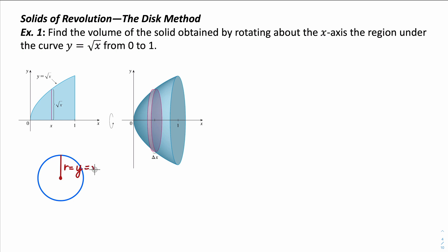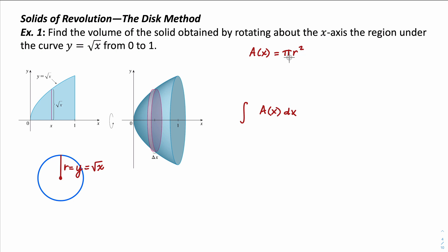We know that y equals √x, and we need to integrate A(x) with respect to x, where A(x) represents the area of the cross-section. So A(x) equals πr². The radius r is the y value, which is √x. So A(x) equals π times (√x)², which is just π times x. That's our area function.